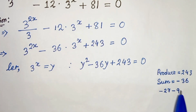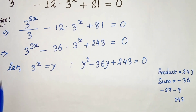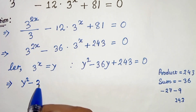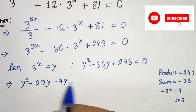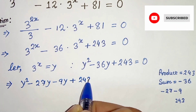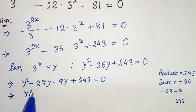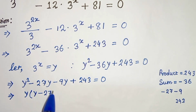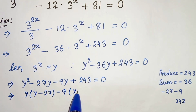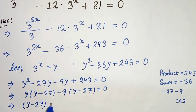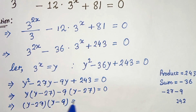So in the next step, we can write y squared minus 36y as y squared minus 27y minus 9y, plus 243 equals to 0. We can take y common from the first two terms — giving y minus 27 — and minus 9 common from the last two terms — giving y minus 27 — equals to 0. So we factor as y minus 27 times y minus 9 equals to 0.